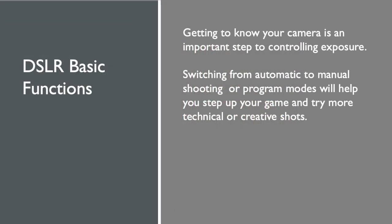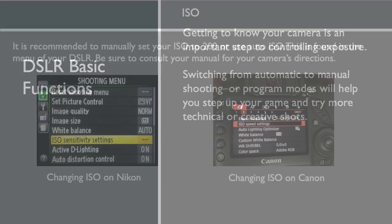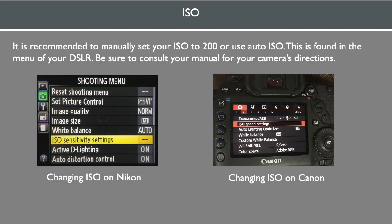Getting to know your camera is an important step. Switching from automatic to manual shooting or program modes will help you step up your photography skills and try more creative or technical shots. Let's look at basic DSLR functions. It's recommended to manually set your ISO to 200, or you can simply use auto-ISO. This is found in the menu of your DSLR. Be sure to consult your manual for your camera's directions.